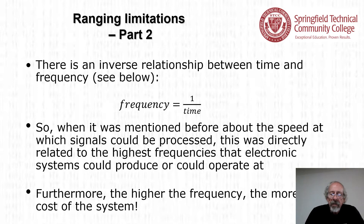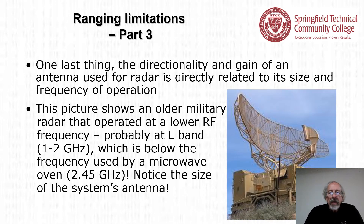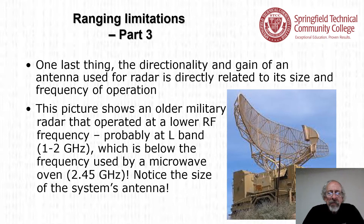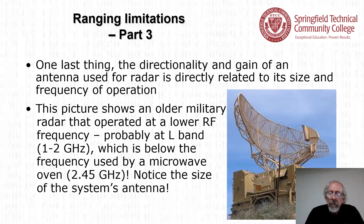The higher the frequency, the more the cost of the system. The directionality and gain of a radar antenna are directly related to its size and frequency of operation. An older military radar operating at lower RF frequency — probably L-band, one to two gigahertz, which is below the 2.45 gigahertz of a microwave oven — required a very large antenna to get high directionality or high gain.